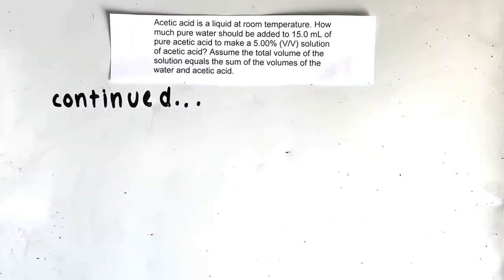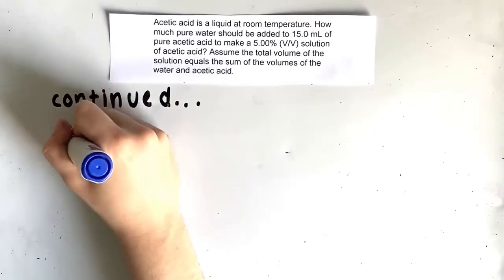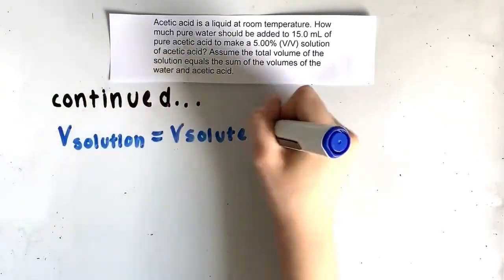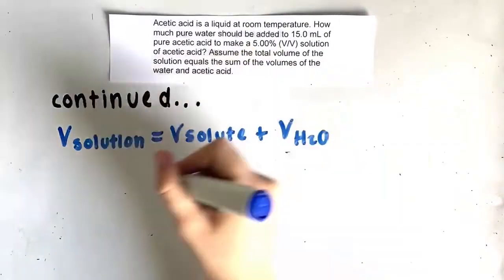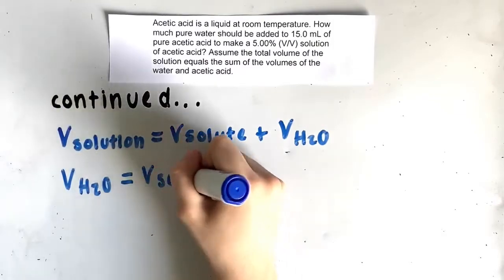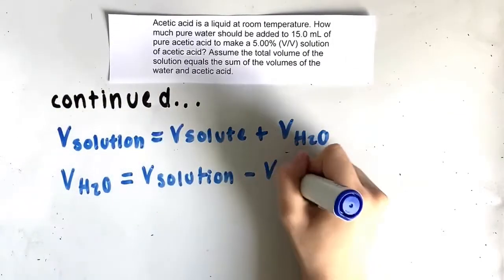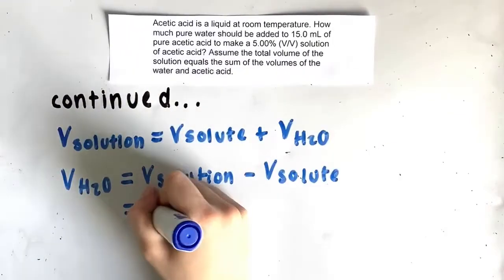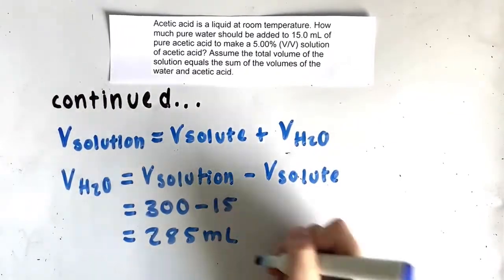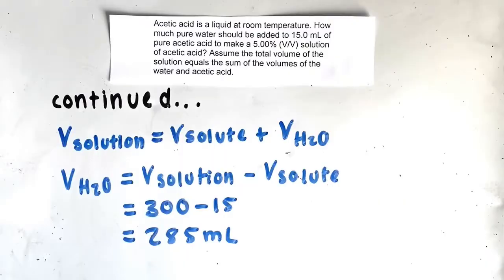Since the question asks for the volume of pure water, we subtract the volume of the solute from the total volume of the solution: 300 minus 15, which gives us 285 milliliters of pure water.